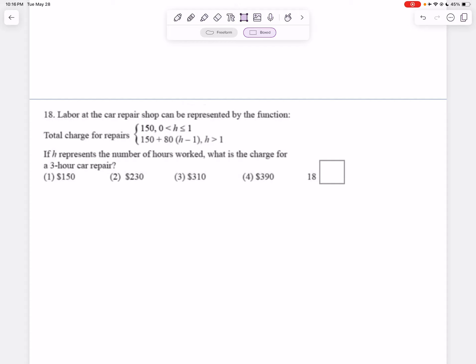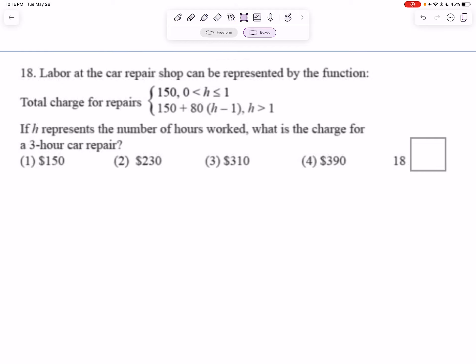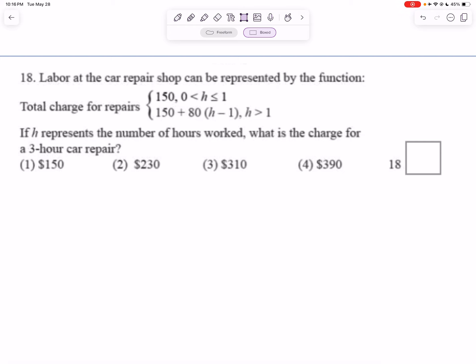Number 18. Labor at the car repair shop can be represented by the function: total charge for repairs is 150 for 0 less than h less than or equal to 1, and 150 plus 80 times h minus 1 for h greater than 1. If h represents the number of hours worked, what is the charge for a three hour car repair?